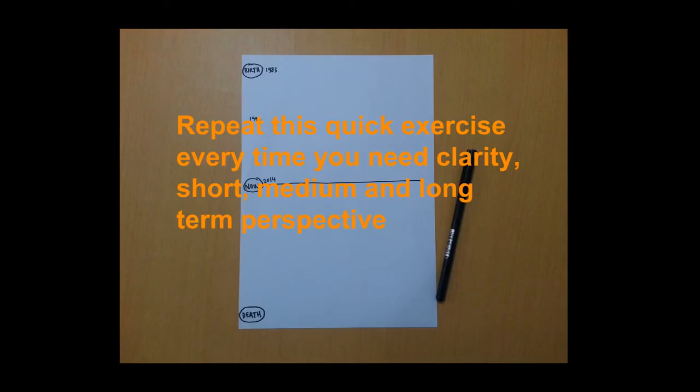The idea is that this is like a business plan, but for your life — and of course it's going to change. What I suggest is that you don't spend a lot of time on it at once: spend half an hour drawing your past or the last few important things from recent years, draft something, then do it over and over again. Every time you have doubts about the direction you want to take, or need more clarity about short, medium, or long term, use this very simple and free method — just a pen and paper.